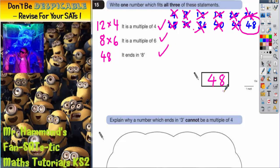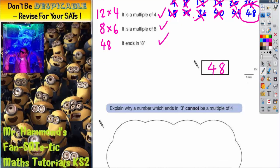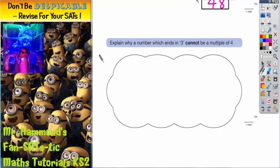Moving on, we'll get a different color. It says explain why a number which ends in three cannot be a multiple of four. Well, what you need to say is this: all numbers ending in three are odd. Every number that ends in three has got to be odd, full stop. There's no other way of arguing about that.